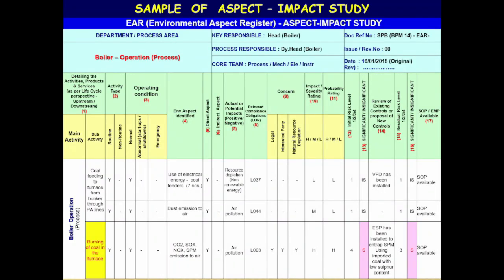After doing the study, all the activities in the process, products and services — those which can or may interact with the environment — are to be captured in the EAR (Environment Aspect Register) as per ISO 14001 2015 standard requirement. This EAR will be subjected to ISO audit by internal and external auditors. The sample EAR format belongs to the boiler operation process. The EAR should contain all relevant information pertaining to the department activities and the impact on the environment. On the top rows of the format, key in the name of the department, who is responsible, who is the person responsible, and who are the core team members who have prepared this EAR format.